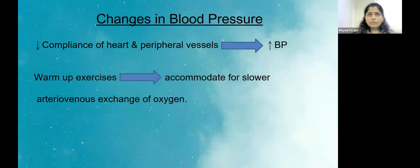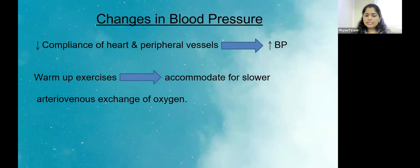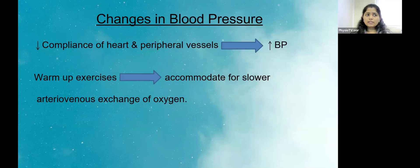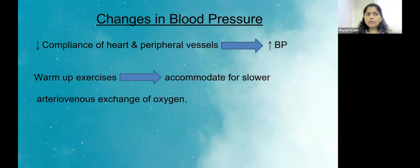Changes in blood pressure: reduced compliance of heart and peripheral vessels with aging leads to increased BP because resistance increases and the pressure on the whole cardiovascular system increases. This is why we majorly focus on warm-up exercises — they accommodate for slower arteriovenous exchange of oxygen, so a person adapts to the VO2 max levels in the body.